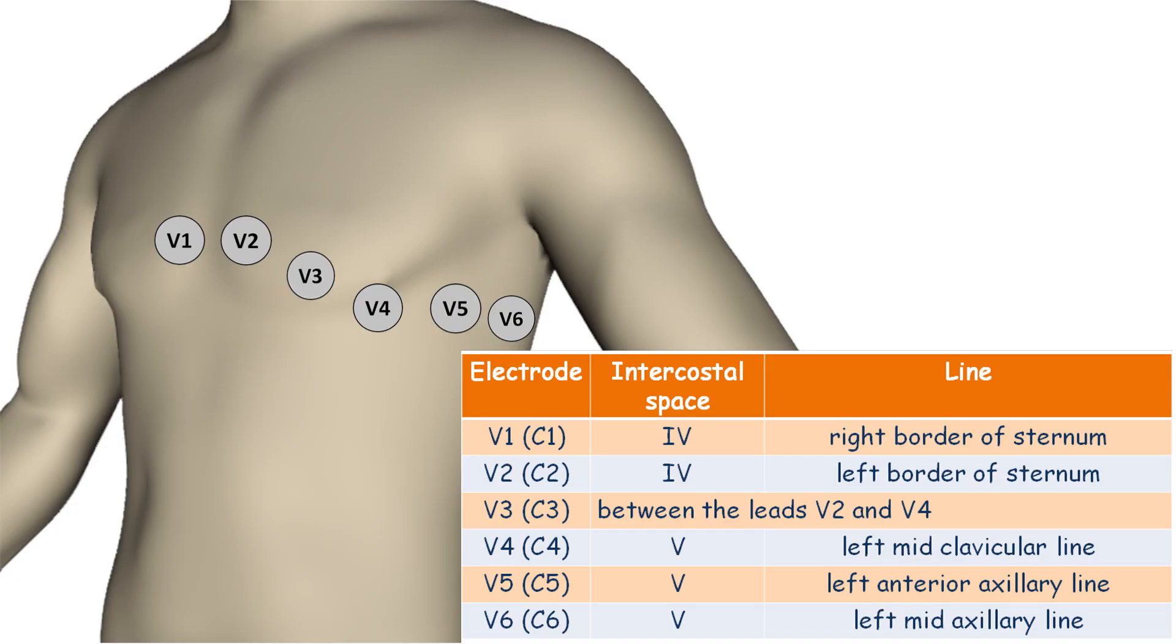Precordial leads are placed on the anterior surface of the chest in the following way. V1 is attached at the 4th intercostal space at the right border of the sternum. V2 is placed at the 4th intercostal space at the left sternal border, opposite to the V1 lead.